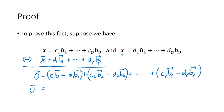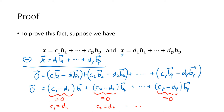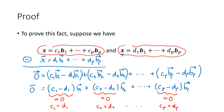Now I can use algebraic properties and factor out the b vectors. I get (c1 − d1)·b1 + (c2 − d2)·b2 + ... + (cp − dp)·bp. What we have is a linear combination of the b vectors equal to the zero vector. But one of the things we know about a basis is that the vectors are linearly independent, and when vectors are linearly independent the only linear combination equal to the zero vector is when all scalars equal zero. So c1 must equal d1, c2 must equal d2, all the way up through cp equals dp, meaning those two different-looking linear combinations are actually the exact same linear combination.